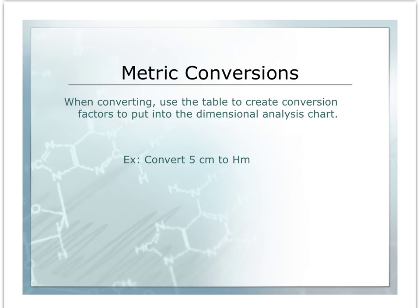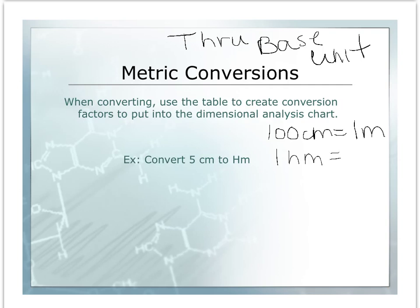All right, let's do another one. We're going to convert five centimeters to hectometers. Again, we want to look at our charts and try to find our units. We're going to go through the base unit, because we do not have a direct conversion from centimeters to hectometers. We know that 100 centimeters equals one meter, and one hectometer equals 100 meters.